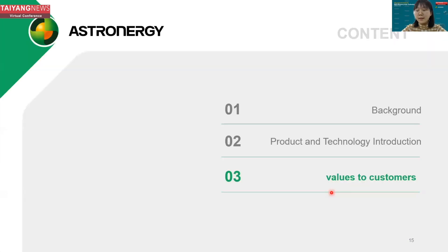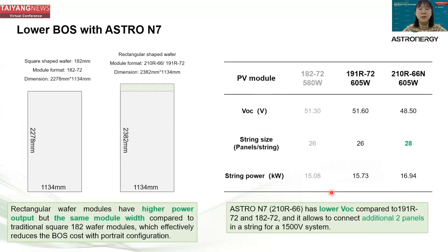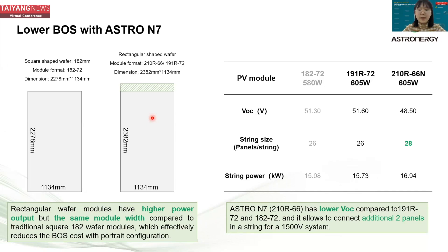In the third section, I'll discuss the values to the customer. Comparing with the square-shaped wafer 182×72 module, the rectangular wafer module has higher power output but the same module width. This effectively reduces BOS cost when the module configuration is in portrait. With the same panel quantity, we have the same cable consumption and torque tube length, but with higher module power output, we can increase the DC capacity of the system.